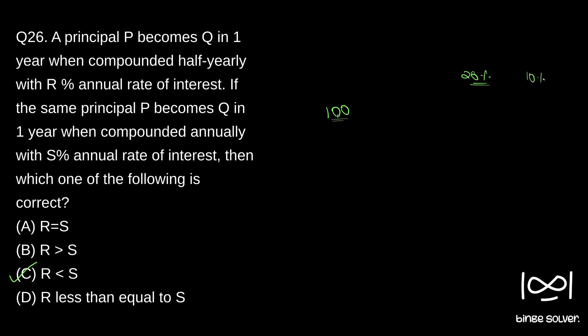So 10 percentage of 100 is 10 rupees. So after six months, this 10 rupees interest will be added to the principal. So after six months we will have 110 rupees.